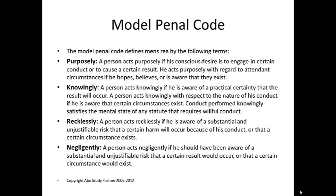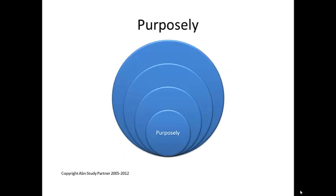What we want you to do is grab four pieces of paper, four 8½ by 11, and put them out. On that first piece of paper, draw a relatively small circle. In the center of that circle, put the letter P. Looking at the Model Penal Code at the bottom, P stands for what? Purposely.